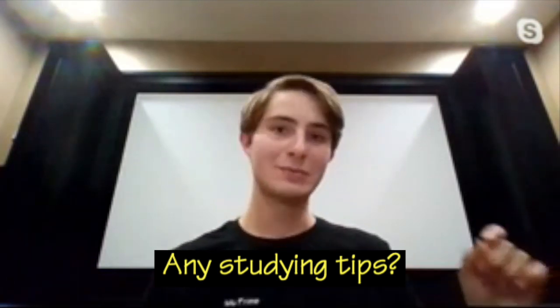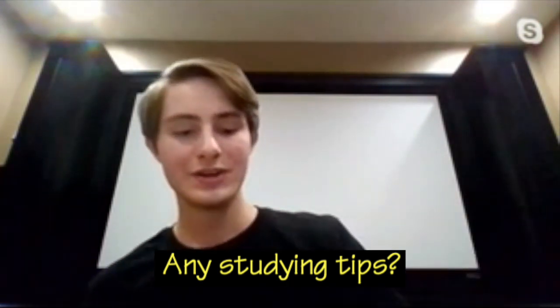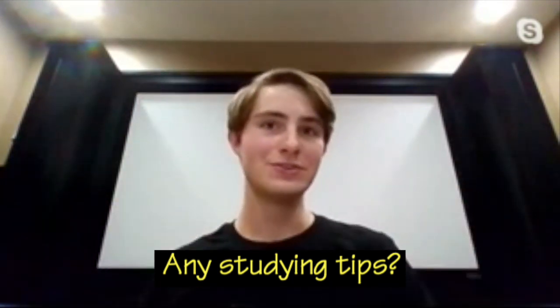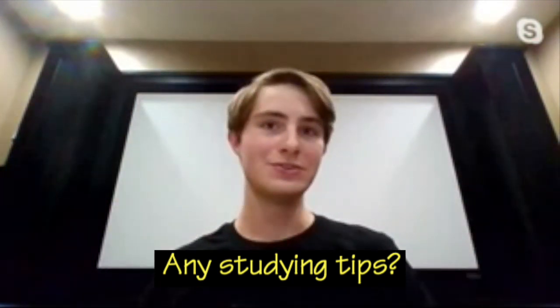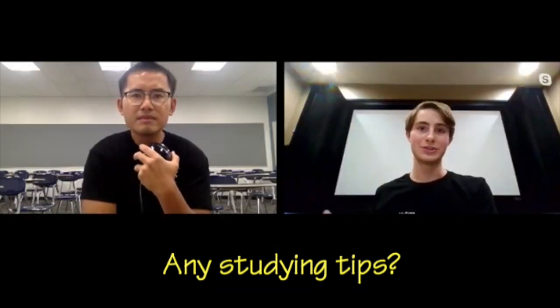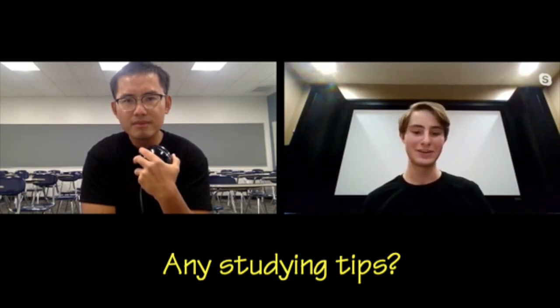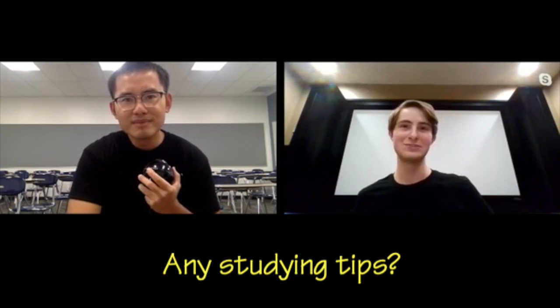So for example, if you know why you have to find du when you're doing u substitution instead of just switching the variable, then when you go to Vector Calculus and learn about the Jacobian, it actually makes sense. Because if you just learned, oh, this is just something I have to do when I integrate, and then someone shows you to take the determinant of this matrix, where did that come from?